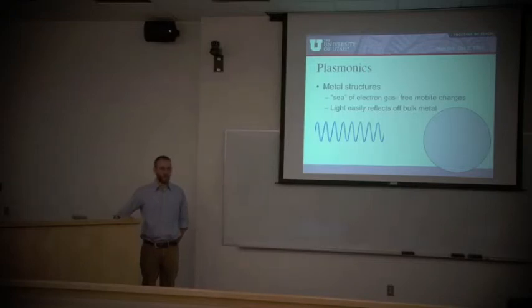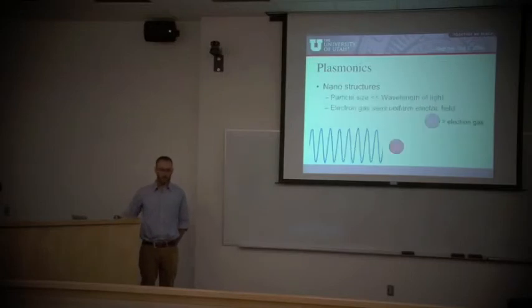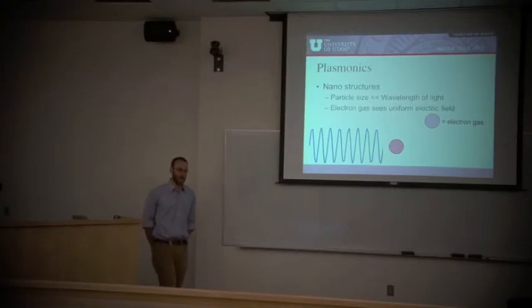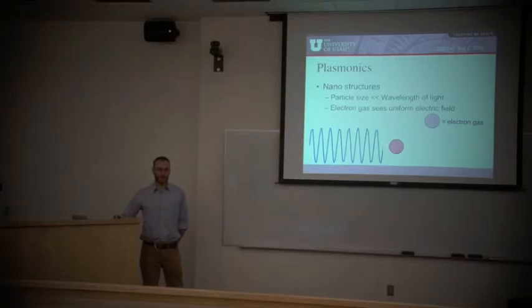But again, if you make this much, much smaller, and now it's on the order of, its size is much smaller than the wavelength of light, you get a different mechanism. This electron gas of the structure is now, the whole structure of electron gas is experiencing a uniform electromagnetic field. Because remember, light is nothing more than oscillating electromagnetic fields.